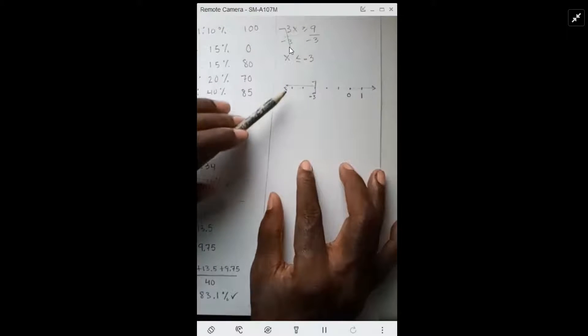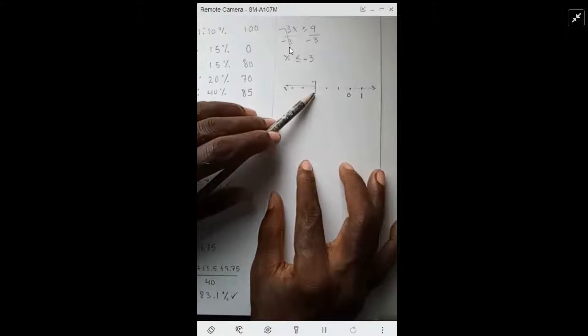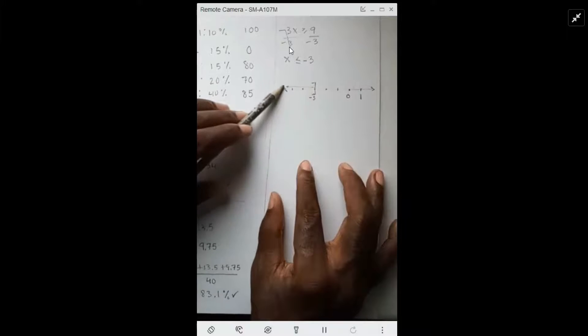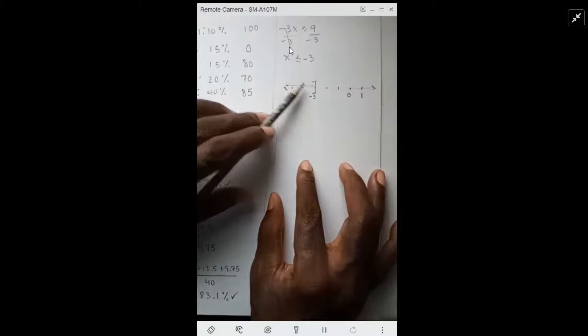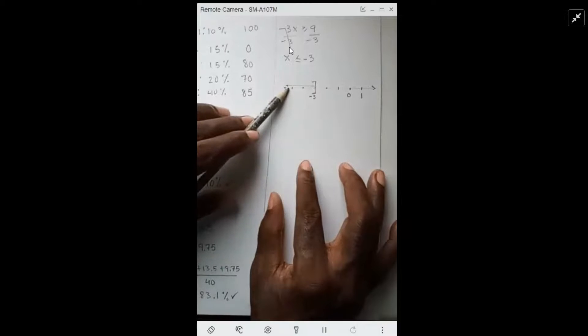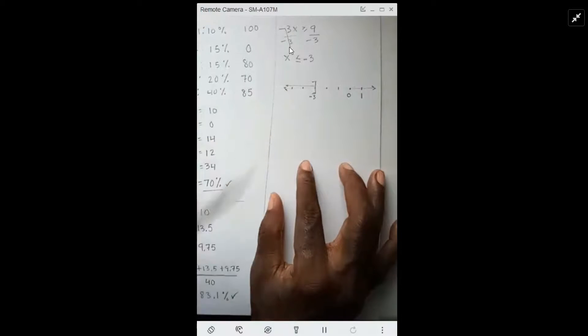9 divided by negative 3. And so because it's equal, square bracket, arrow going left means that we're including all numbers left of negative 3, including negative 3.